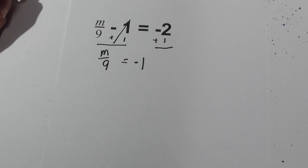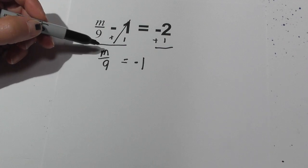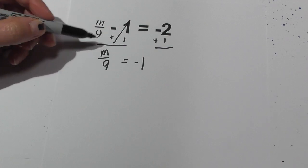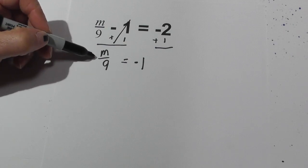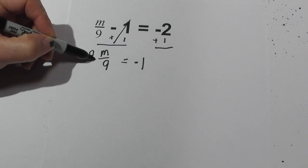Now I need to isolate the m, and I can multiply it by its reciprocal. Technically you could write it as 1 over 9 times m. So I'm just going to do this. We have 9 over 1.